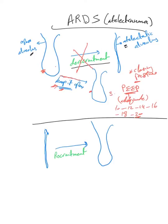Now, looking at the atelectatic alveoli — changing them from an atelectatic state to an open state is called recruitment. We want to encourage this recruitment. PEEP's main function is to prevent de-recruitment, but it doesn't help much with recruitment itself, because for recruitment you need to provide the alveoli with what we call opening pressure, which is much higher than closing pressure.